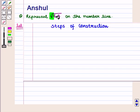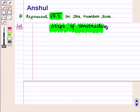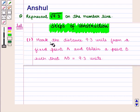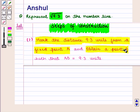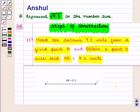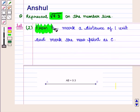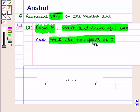To represent square root of 9.3 on the number line, we will follow the steps of construction one by one. First, we mark the distance 9.3 units from a fixed point A and obtain a point B such that AB is equal to 9.3 units. Then from B, we mark a distance of 1 unit and mark the new point as C.